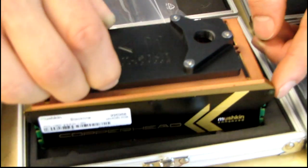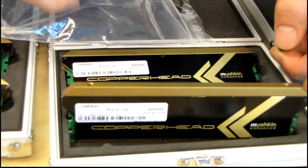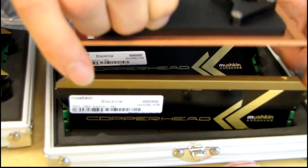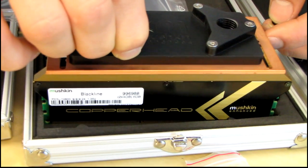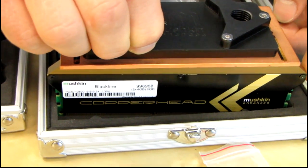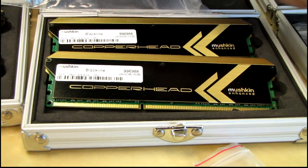You put some thermal interface material in between the top of the Copperhead module here, which you can see is flat, and the bottom of the water block itself. And that is how you cool your memory using water cooling.